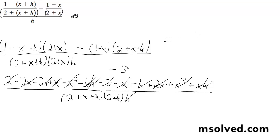And the solution here is simply negative 3 over 2 plus x plus h, 2 plus x. And that's it.